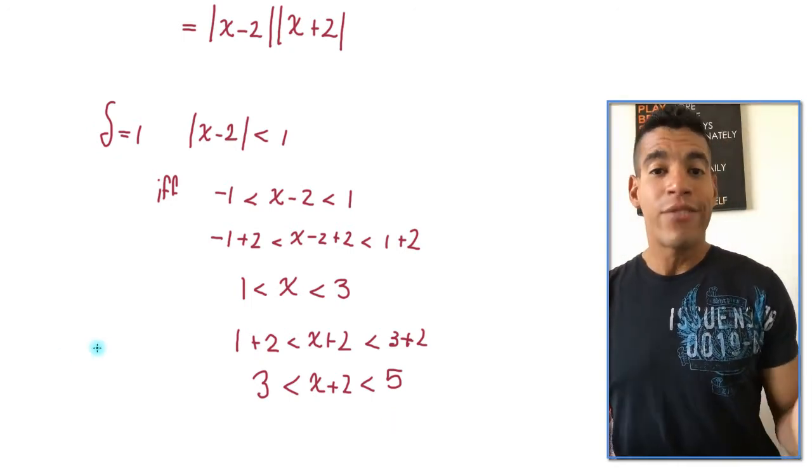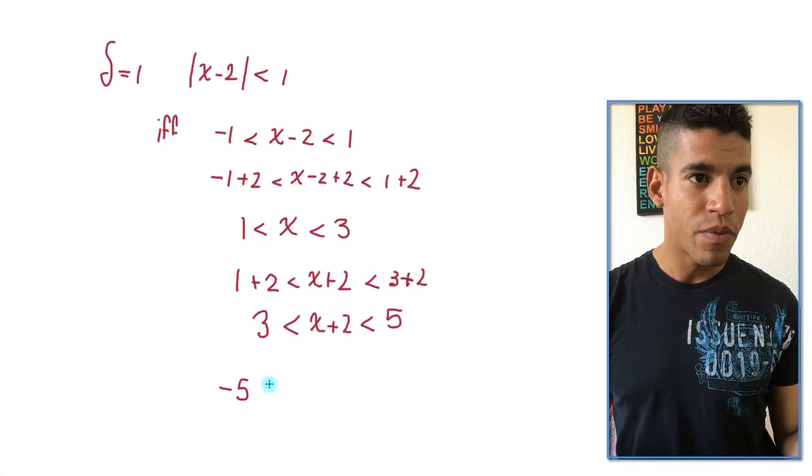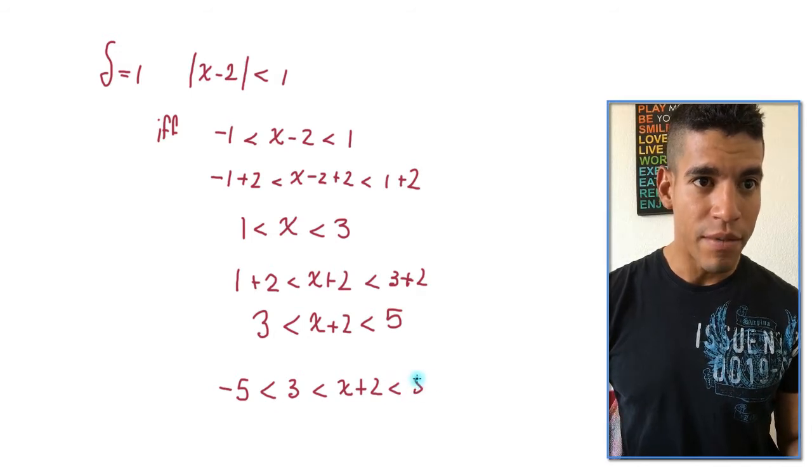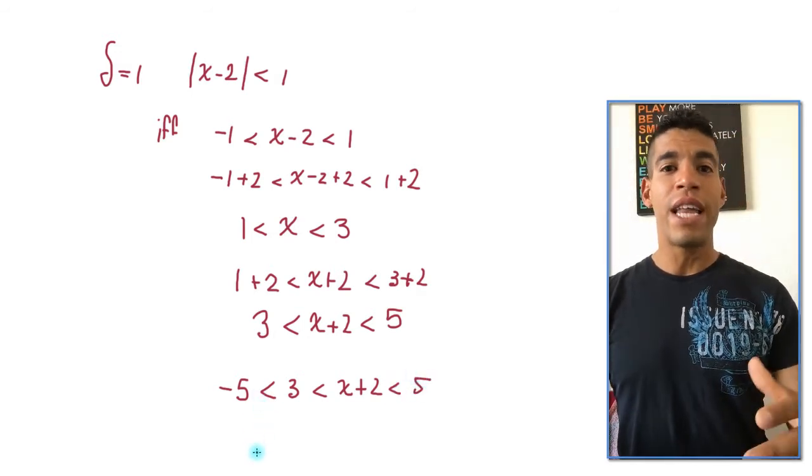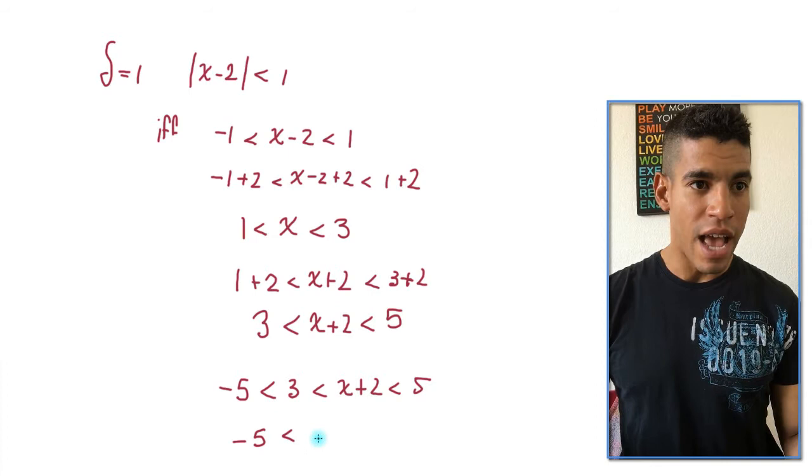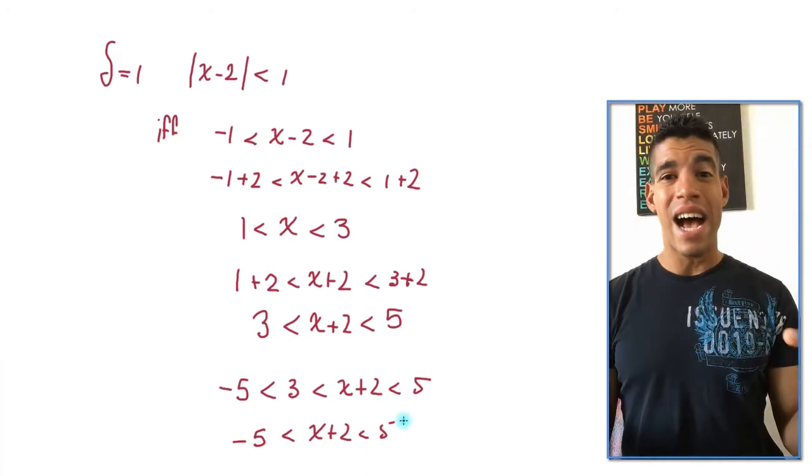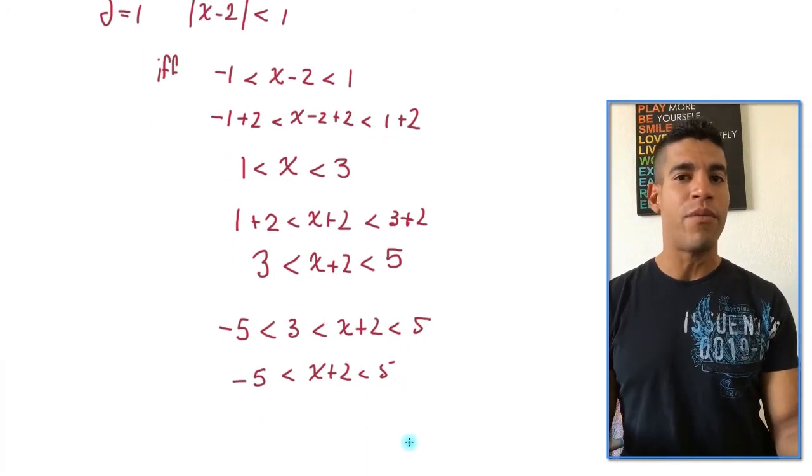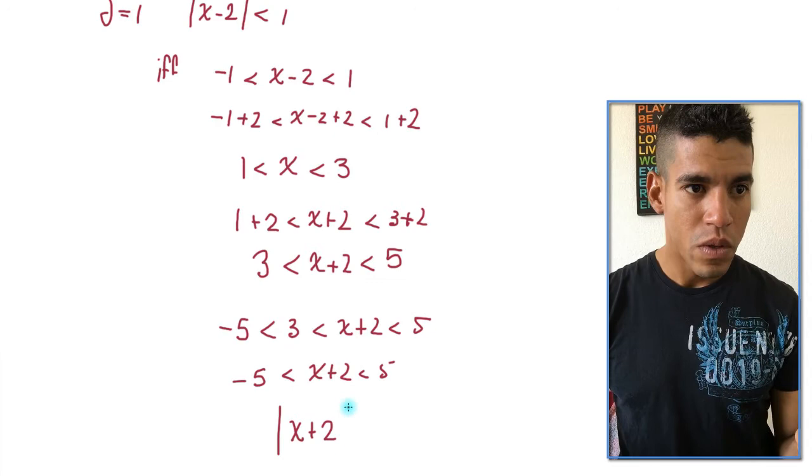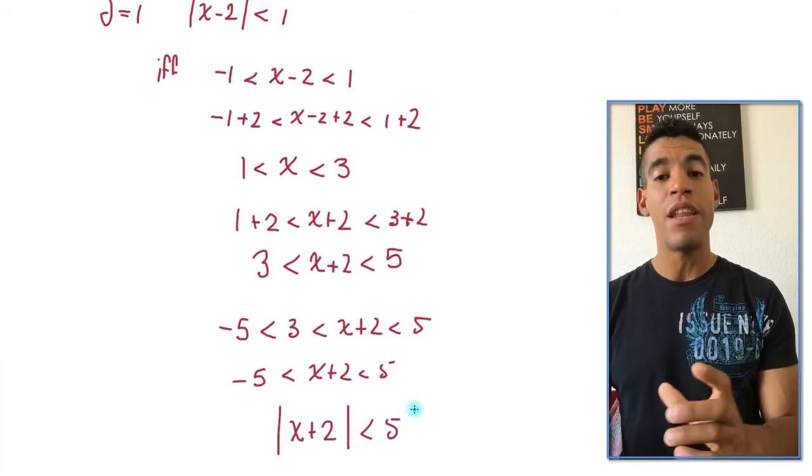Now, because 3 is greater than minus 5, so we can write that as the following. So minus 5 is less than 3, which is less than x plus 2, which is less than 5. So because this is true, I can get rid of negative 3 and just have it as negative 5 less than x plus 2 less than 5. And by doing that, I now can use the definition of absolute value and make it an absolute value. So I have the absolute value of x plus 2 is less than 5. So 5 is my upper bound. That's the number I'm going to use.